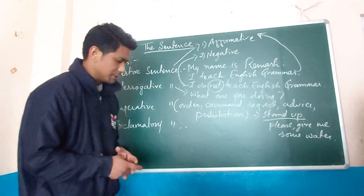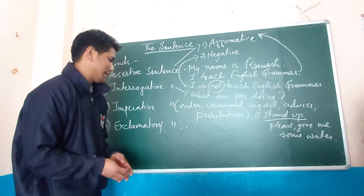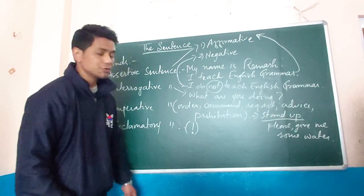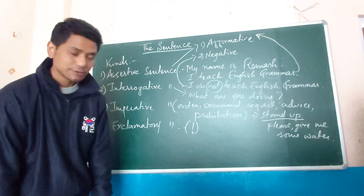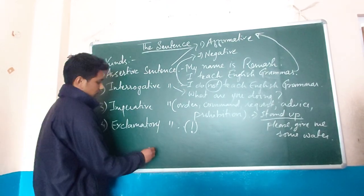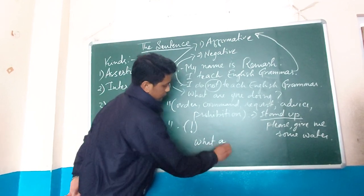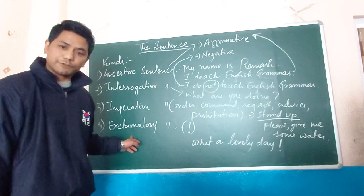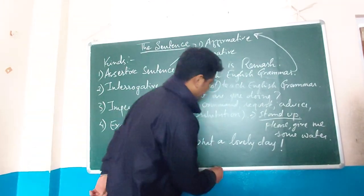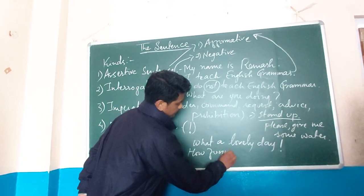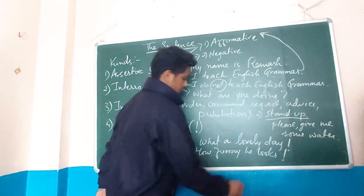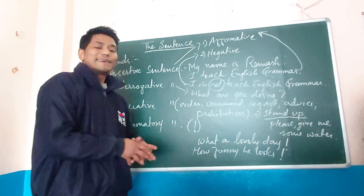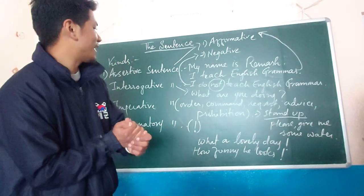Now exclamatory sentences — they are sudden excitements or feelings, and they always end with an exclamation mark. For example: 'What a lovely day!' — exclamatory sentence. 'How funny he looks!' — exclamatory sentence. Sometimes interjections are placed before a sentence to make it exclamatory, like 'alas' or 'hurrah' — that kind of word is added.